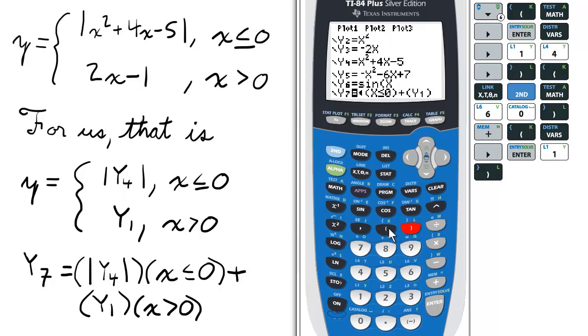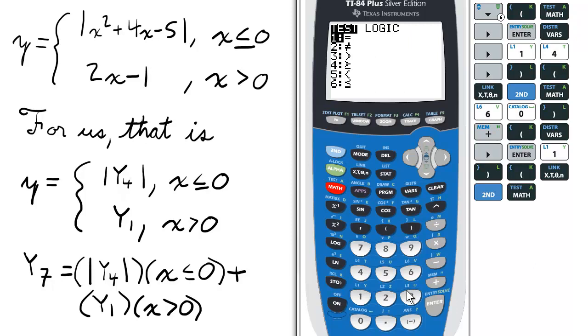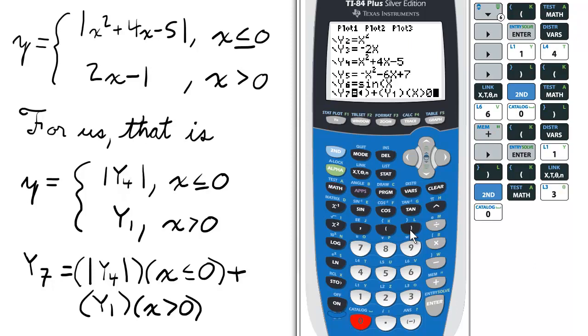open parentheses, x, go to the test menu, 3 for greater than, and then 0, close parentheses, enter.